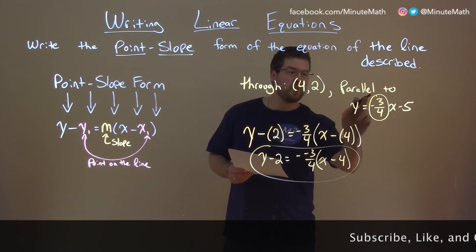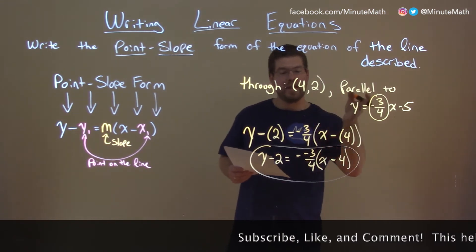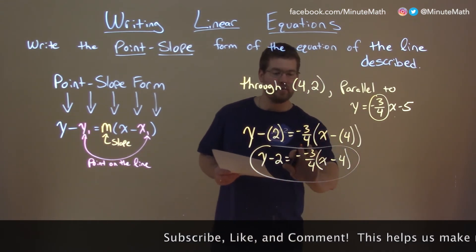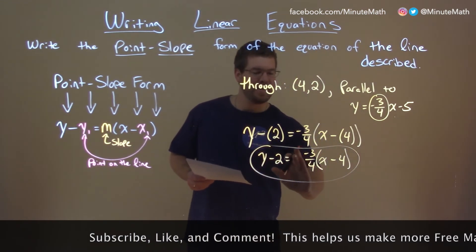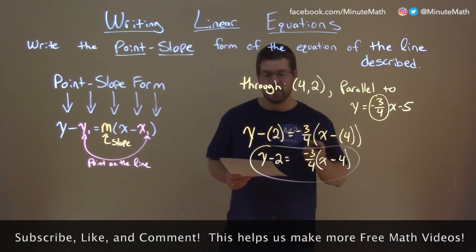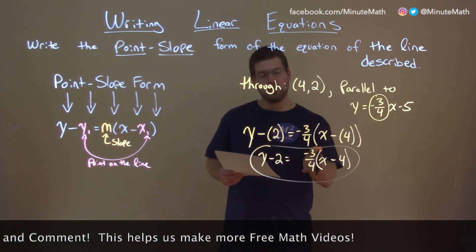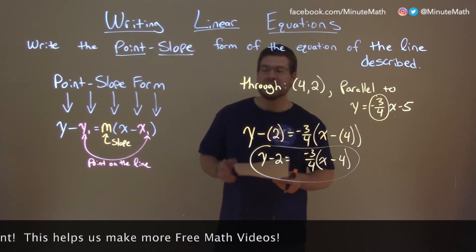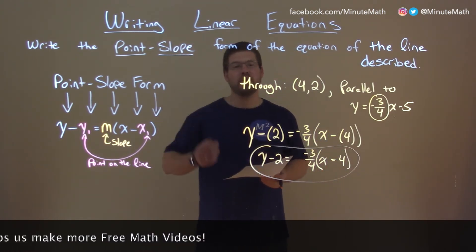We just have to make sure we got the slope that we needed because remember that parallel they had the same slope negative three-fourths. So our answer y minus 2 equals negative three-fourths times x minus 4 and there we have our answer in point slope form.